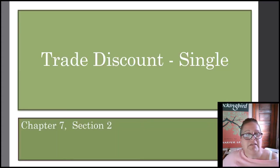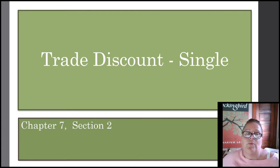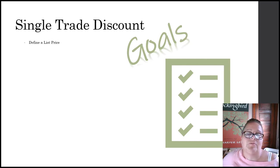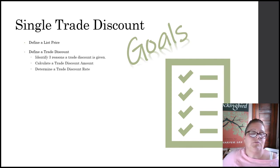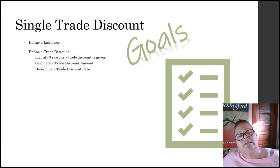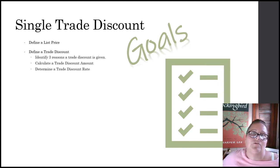This is Chapter 7 in your e-text or your physical textbook if you have one. This is the second section — Single Trade Discounts. Our goals for this section are as follows. The first thing we want to make sure you're able to do is recognize and/or define a list price. We're going to define a trade discount. We want to be able to identify at least three reasons why a trade discount would be given.